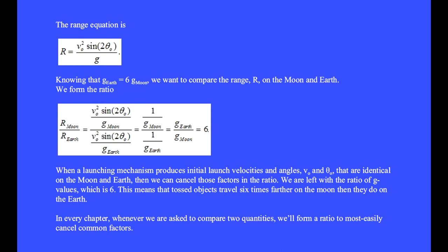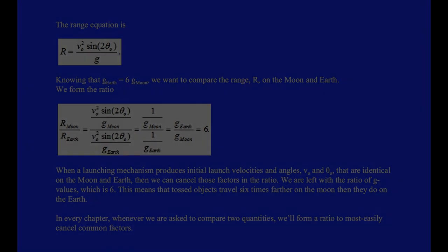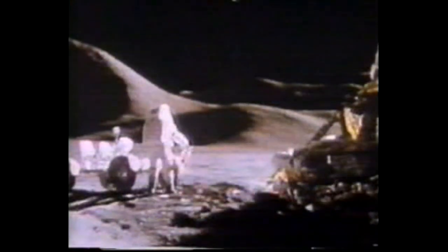Knowing that the gravitational acceleration on the earth is 6 times the value on the moon, we want to compare the range R on the moon and earth. We form the ratio: range for the moon divided by range for the earth. When launching with identical v₀ and θ₀ on the moon and earth, we can cancel those factors. Canceling v₀² and sin(2θ) leaves us with (1/g_moon)/(1/g_earth) = g_earth/g_moon. But this ratio is known to be 6.